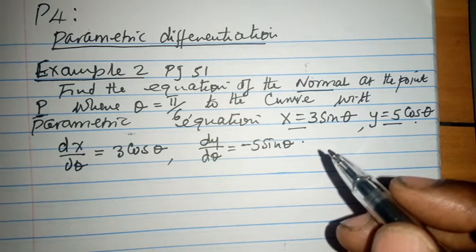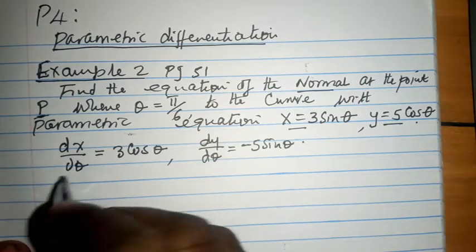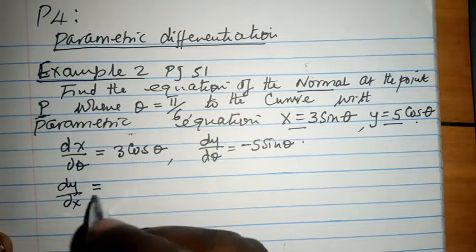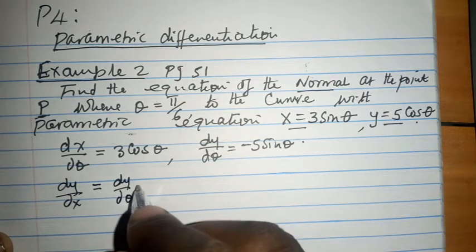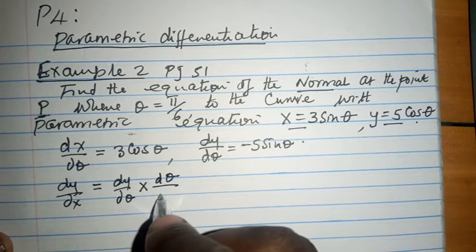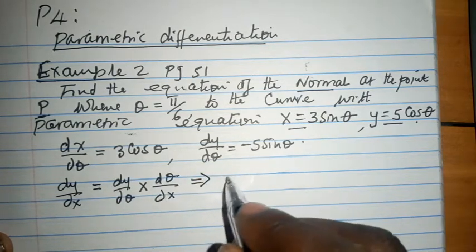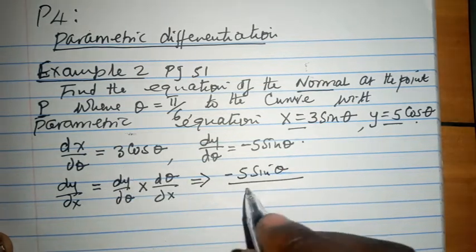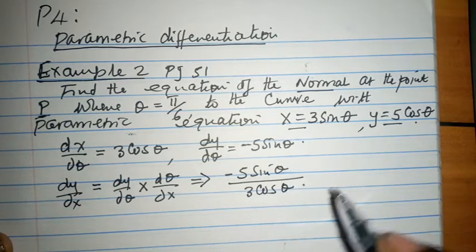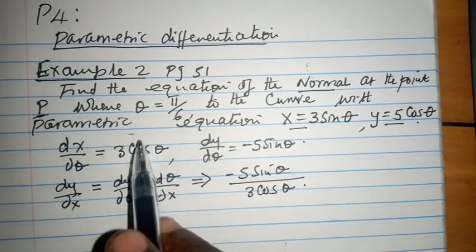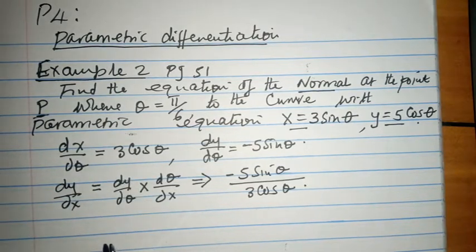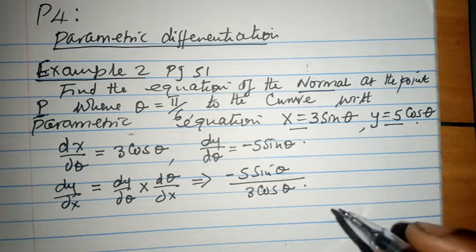We are looking for dy/dx. So dy/dx becomes dy/dθ times dθ/dx, which is basically minus 5 sin theta all over 3 cos theta. Remember dθ/dx is 1 over 3 cos theta, because dx/dθ is just that — it is simply the reciprocal of what we had.